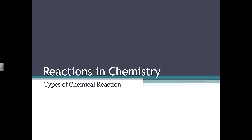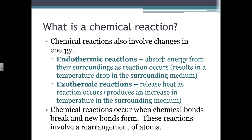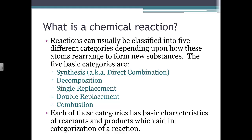We're going to begin section 2 of chapter 11, starting with the different types of chemical reactions. Chemical reactions produce one or more new materials with different chemical and physical properties from the original substances. Indicators that a chemical reaction has occurred include formation of a gas, a change in color, forming a precipitate — a solid that forms and settles out of solution — or other changes in properties, such as marble forming a crumbly solid when exposed to acid rain, or iron rusting when exposed to water and air.